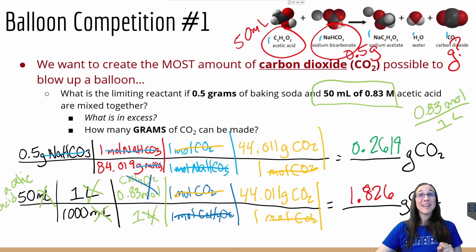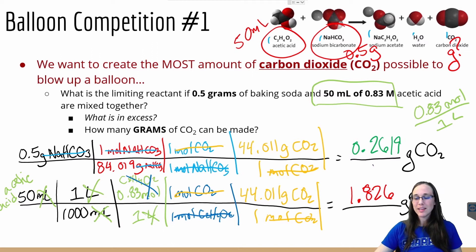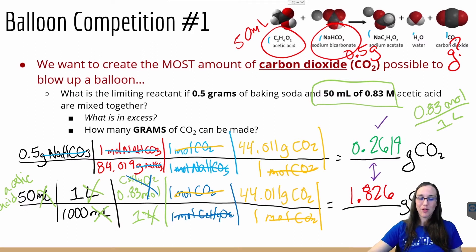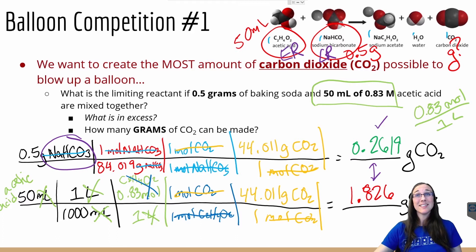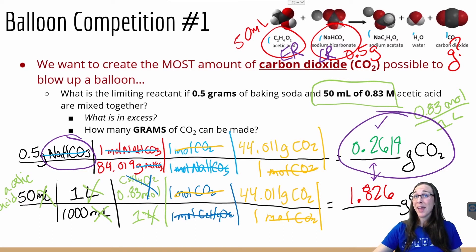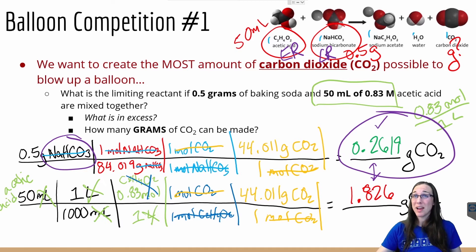The limiting reactant is the reactant that gets used up entirely, or the one that makes the least amount of product. Comparing the two results, 0.2619 grams is clearly the smaller number. Therefore, sodium bicarbonate — or baking soda — would be the limiting reactant in this equation with this amount of starting mass. By process of elimination, we also know that acetic acid would be the excess reactant. So theoretically, 0.2619 grams would be the maximum amount of CO₂ we could make with 50 milliliters of 0.83 molar acetic acid and half a gram of baking soda.